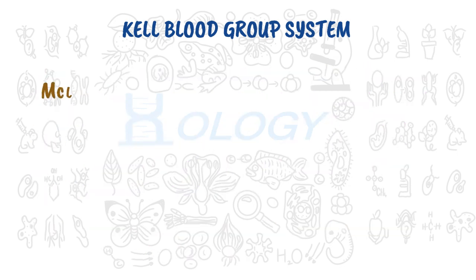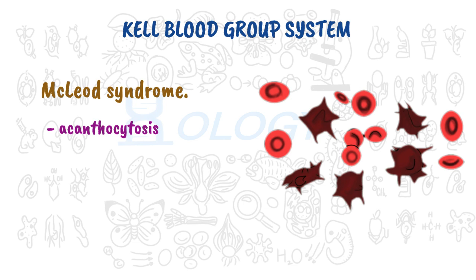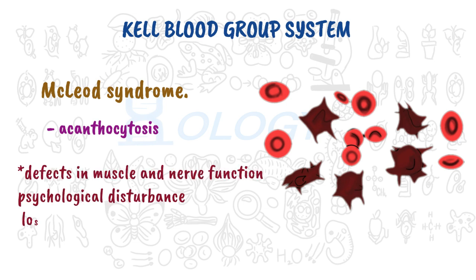In some people the Kx protein is absent, resulting in McLeod syndrome. Characteristics of this syndrome include acanthocytosis — thorny projections on red blood cells — and reduced Kell antigen expression. These abnormalities often lead to defects in muscle and nerve function that manifest as disordered movement, psychological disturbance, and loss of reflexes.